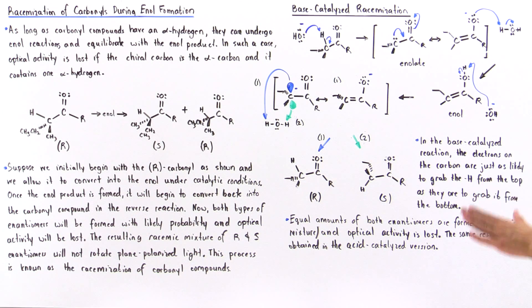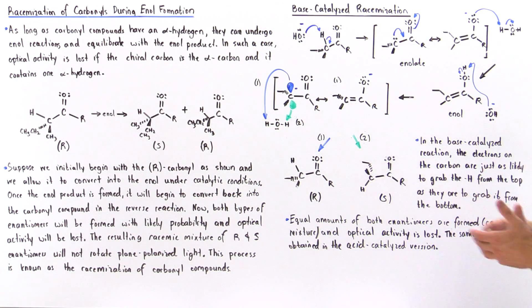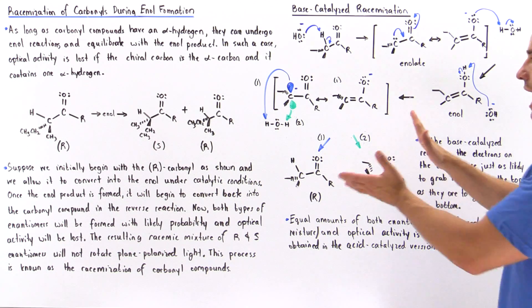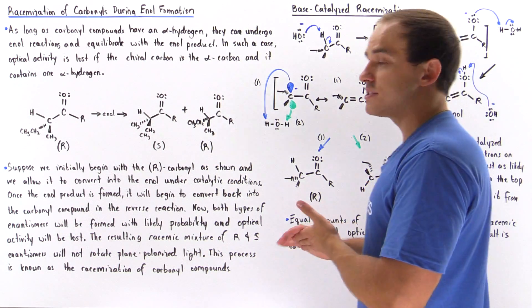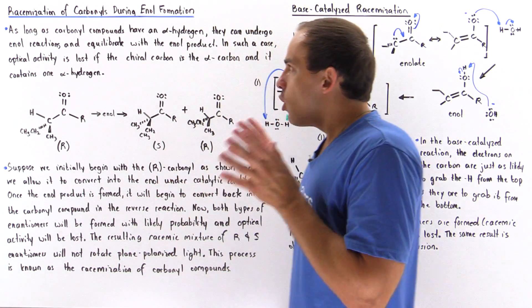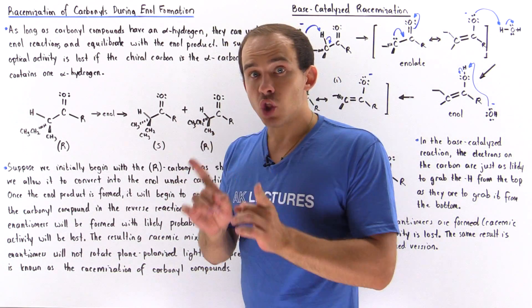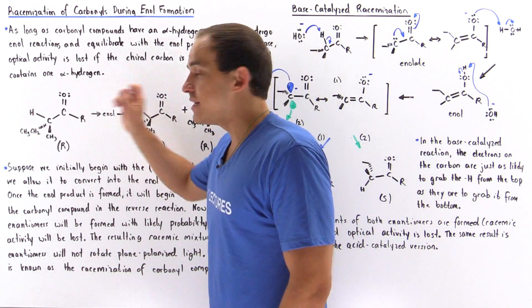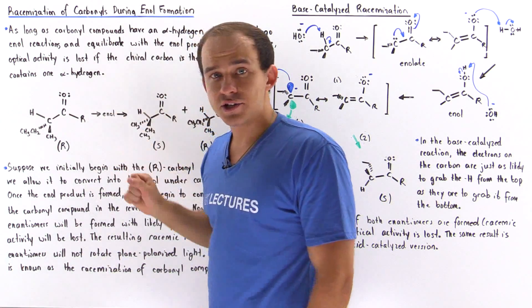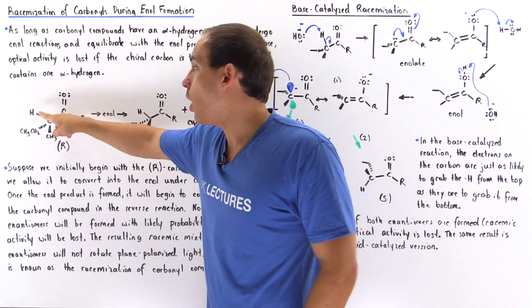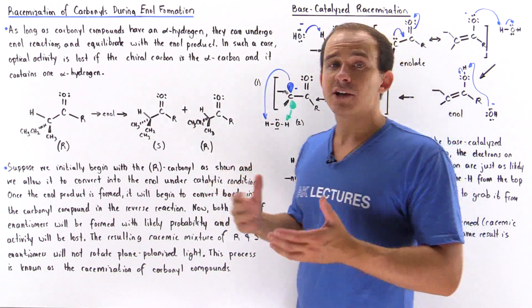The same exact result can be obtained with the acid-catalyzed racemization version, though we won't go into detail since it's exactly the same. This racemization reaction only takes place as long as the carbonyl compound has the chiral carbon at the alpha position and that alpha carbon contains one H atom. Only then will the racemization reaction take place.